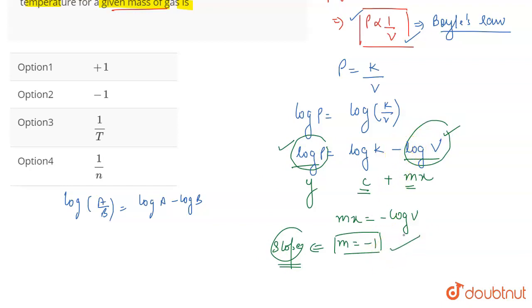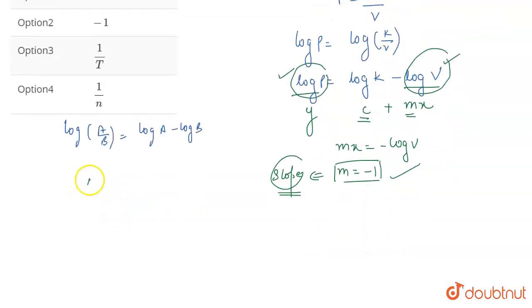So, in this question, they are asking you about the slope. And if you plot the curve, you will get a curve something like this. On the Y axis, we have log P. On the X axis, we have log V.